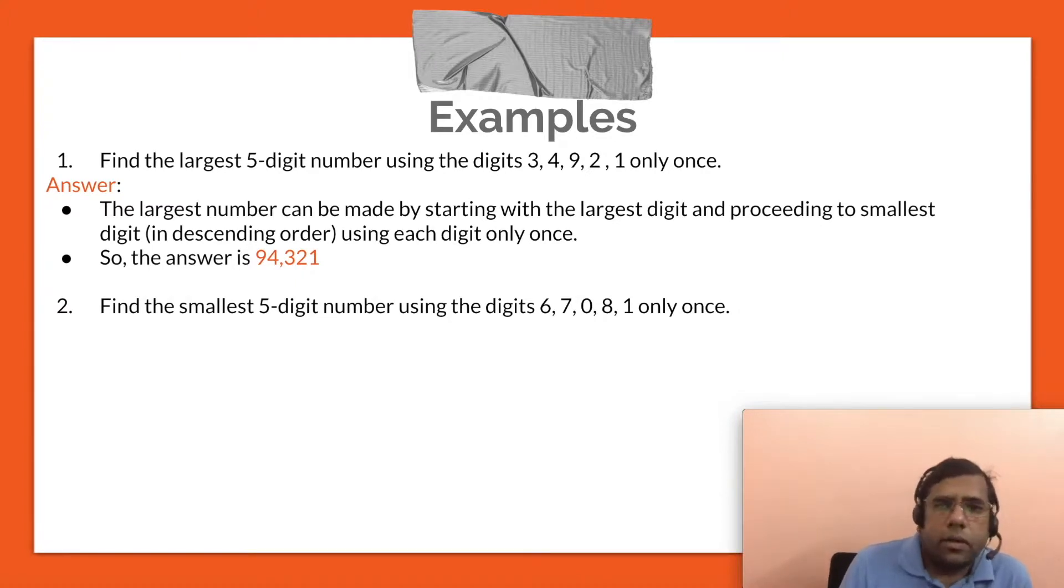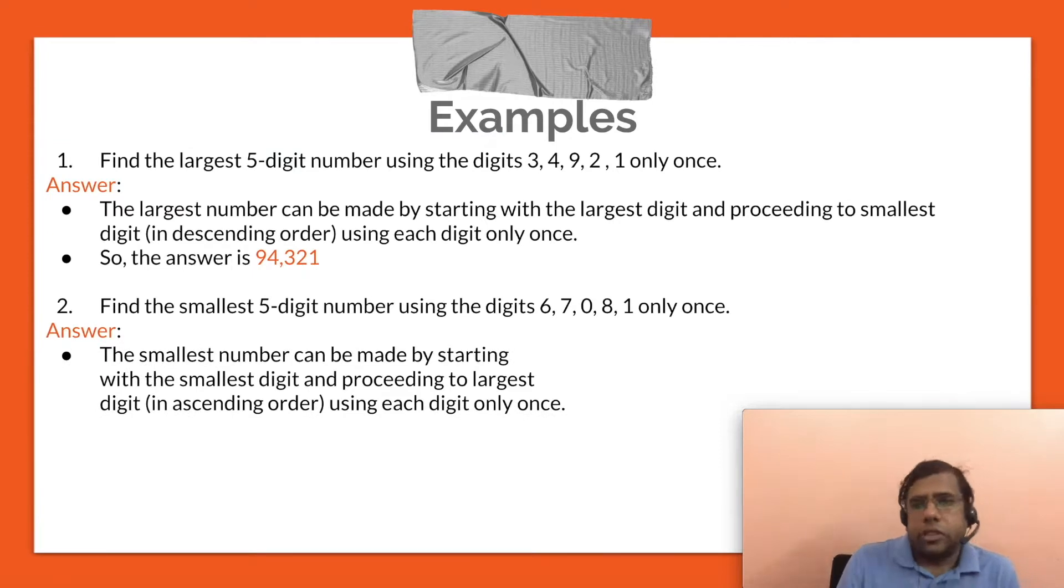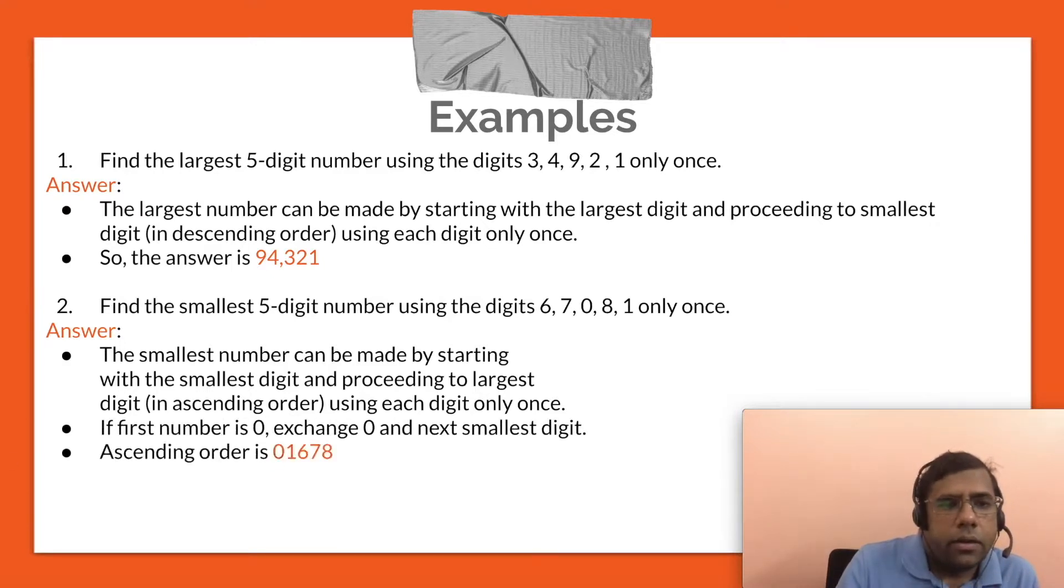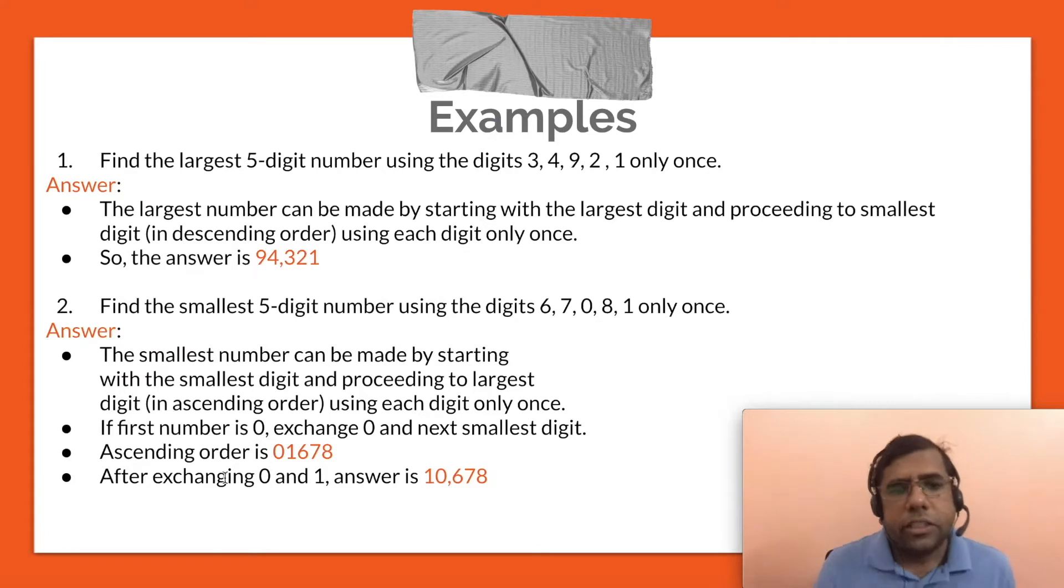Find the smallest five digit number using the digits 6, 7, 0, 8, 1 only once. Now we have zero over here. Now, since we want to find smallest five digit number, let's first arrange this in the ascending order. And we want to use each digit only once. So we first arrange them in the ascending order. And the ascending order is 0, 1, 6, 7, 8. Now, zero is the leftmost digit in this number. The issue is that because of the zero being the leftmost digit, this actually becomes a four digit number while we want the five digit number. So we simply exchange 0 with the next number. So instead of 0, 1, we'll make this 1, 0. And that will be the smallest five digit number. So after exchanging 0 and 1, the answer is 10,678.